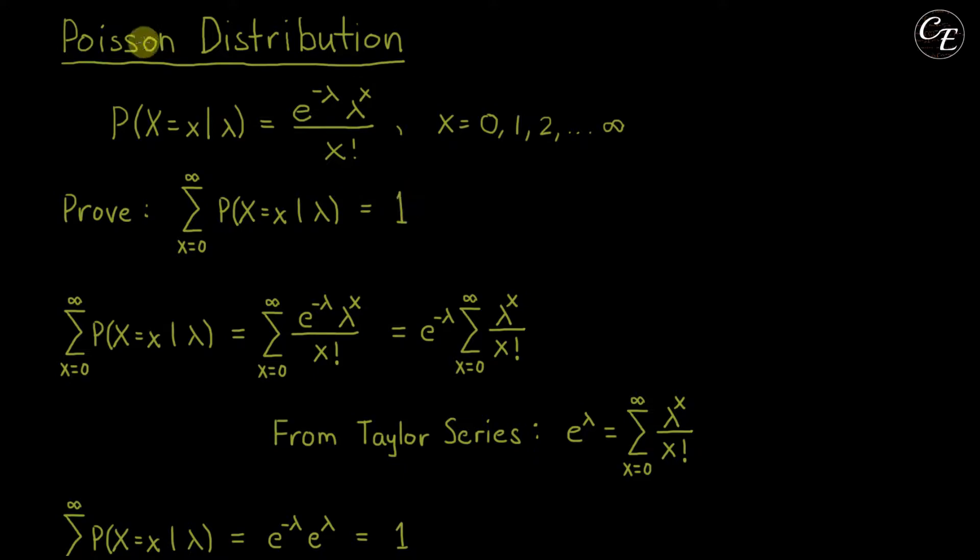Now to introduce this Poisson distribution, Poisson distribution is a discrete probability distribution with the probability mass function shown here: e raised to negative λ times λ raised to x over x factorial. Its domain x is defined to be integers from 0 to infinity.